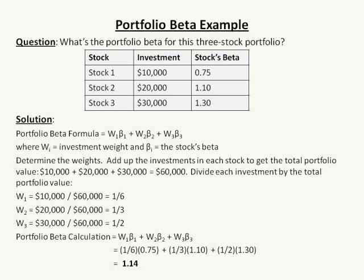Here, there are only three stocks in the portfolio, so written out: W1 × beta1 + W2 × beta2 + W3 × beta3, where the w_i's are the investment weights and the beta_i's are the stocks' betas. First, we need to determine the weights. We don't have the weights — we have the investment amounts. You have to add up all three investments to get the total portfolio value.